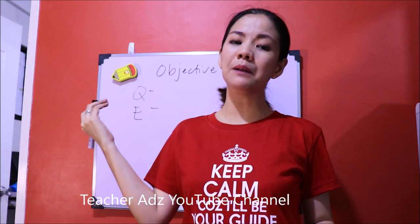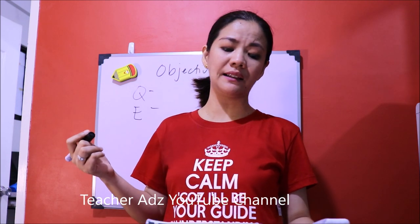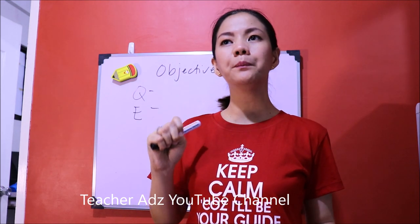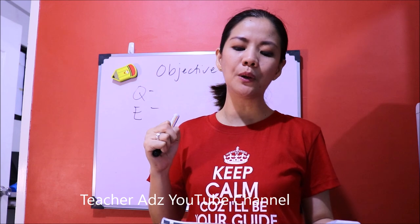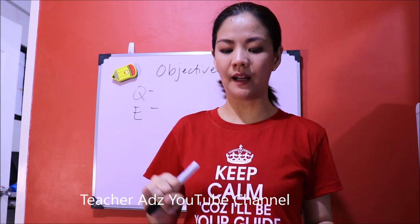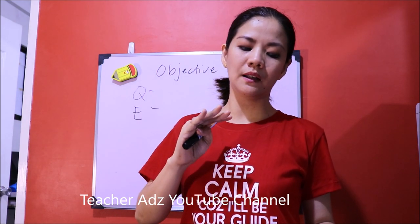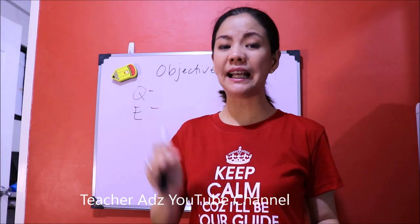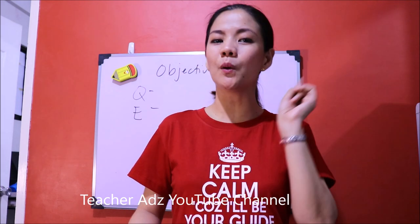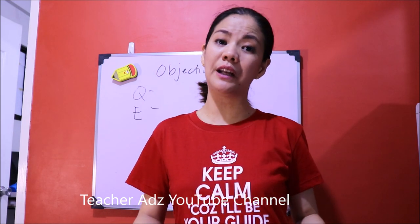In the DepEd context, 'consistently' means quarterly — that is four times. 'Frequently' means three times. 'Occasionally' means two times. 'Rarely' means one time. Looking at the sample portfolio, the highly proficient teacher has only one FGD plan for the school year. Since there is only one, that falls under 'rarely,' which is a rating of 2 — unsatisfactory.